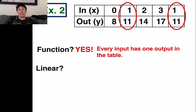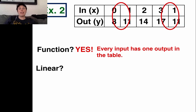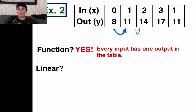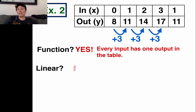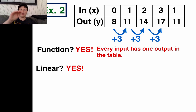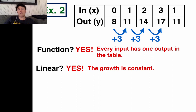Is it linear? I can't see the graph, but I can look at the bottom row of the table and recognize the pattern's growth. It's going up by 3 each time: 8 plus 3 is 11, 11 plus 3 is 14, 14 plus 3 is 17. The growth is constant, so yes — it's linear.